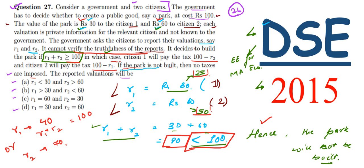Hence they will give their original valuations - R1 will be 30 and R2 will be 60. In the options, option D says R1 is 30 and R2 is 60. Hence option D is the correct answer to this question.